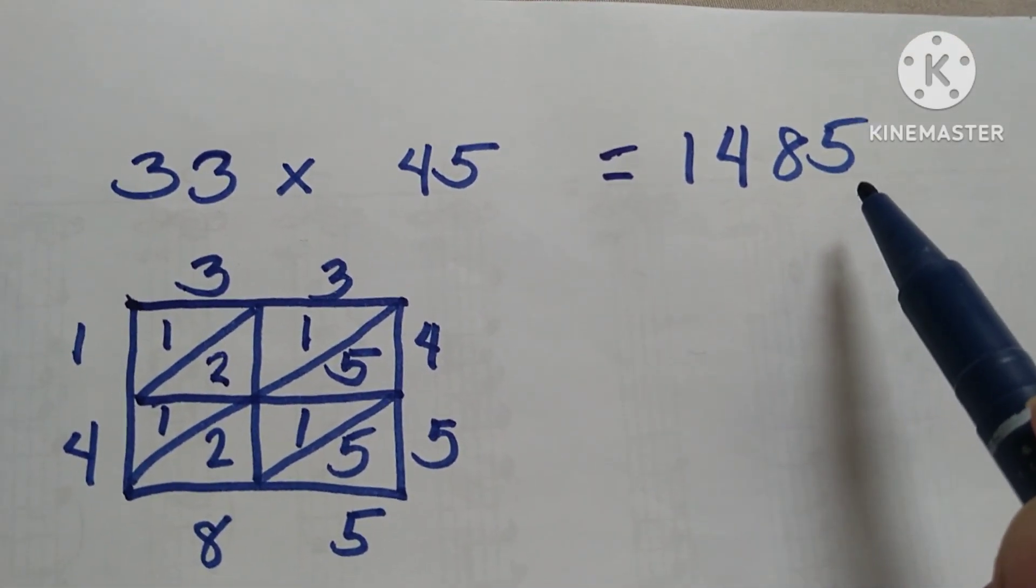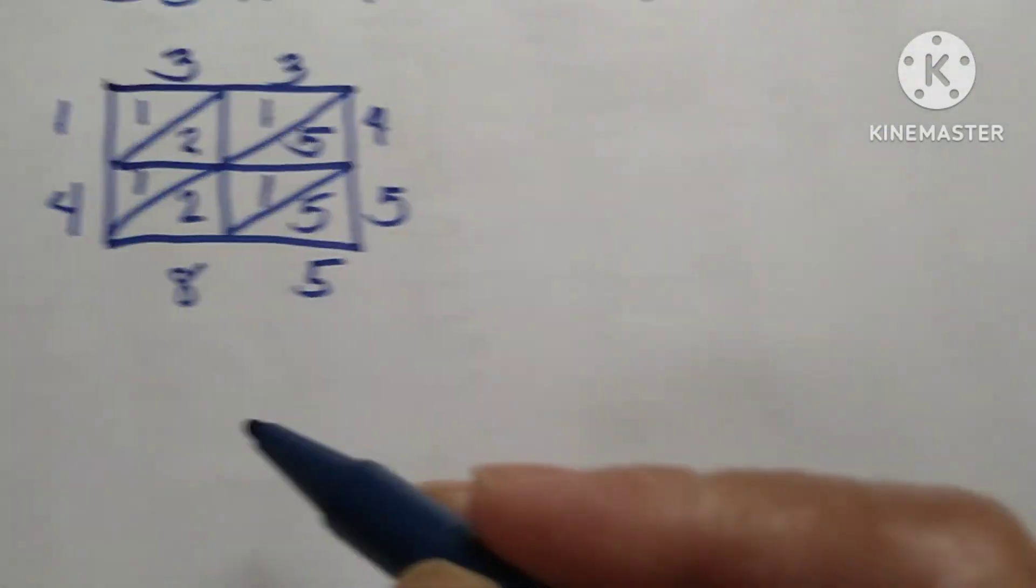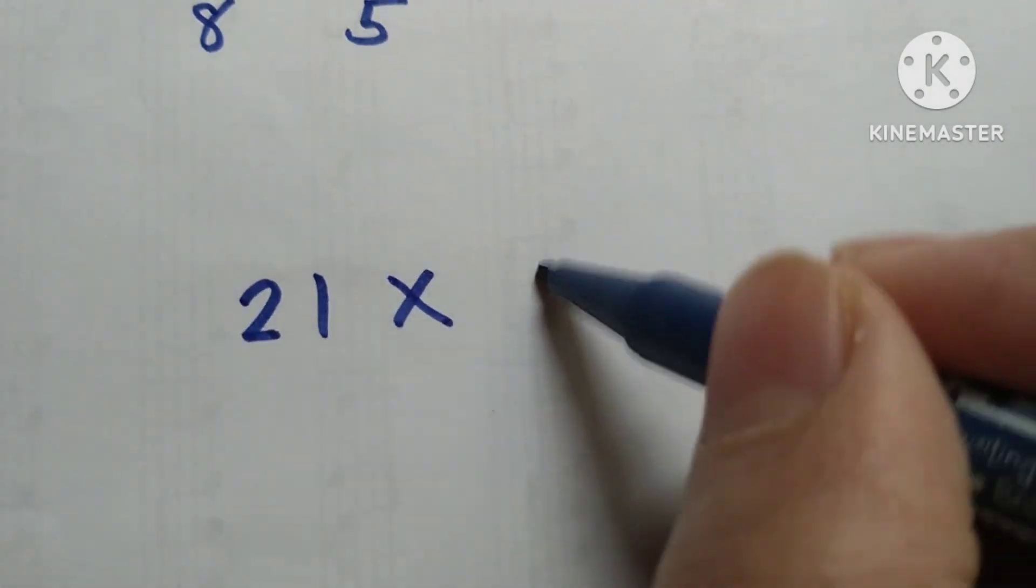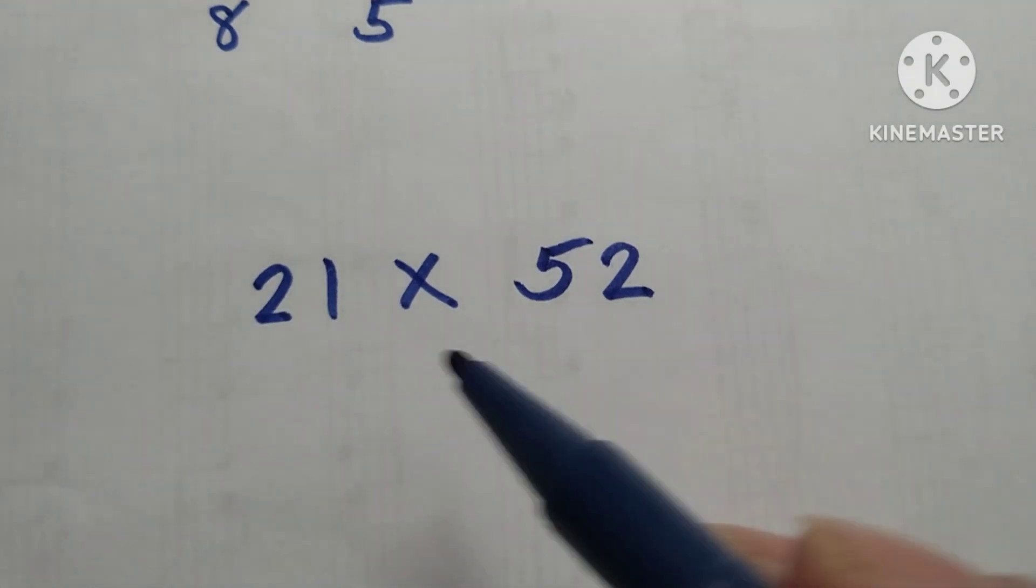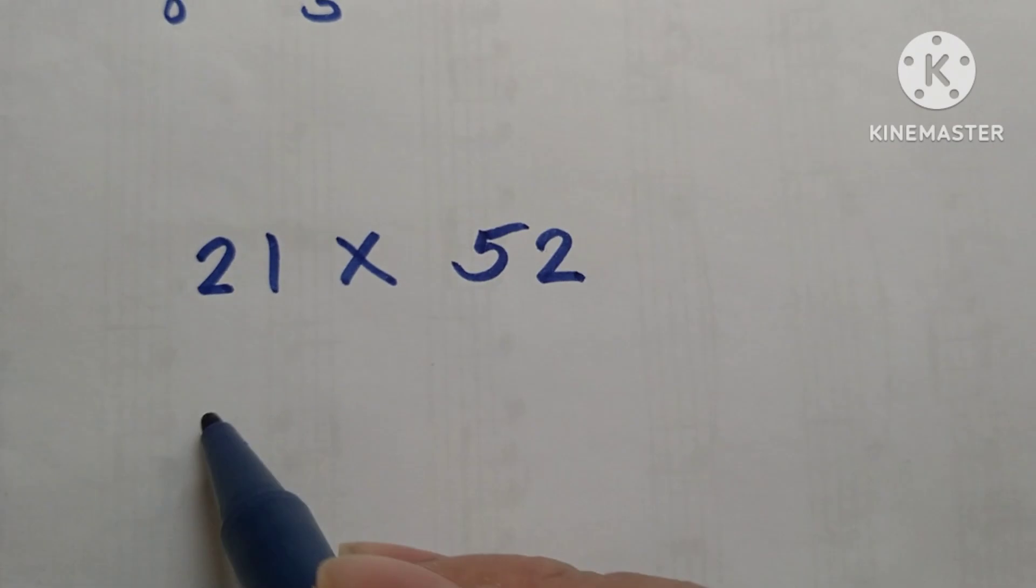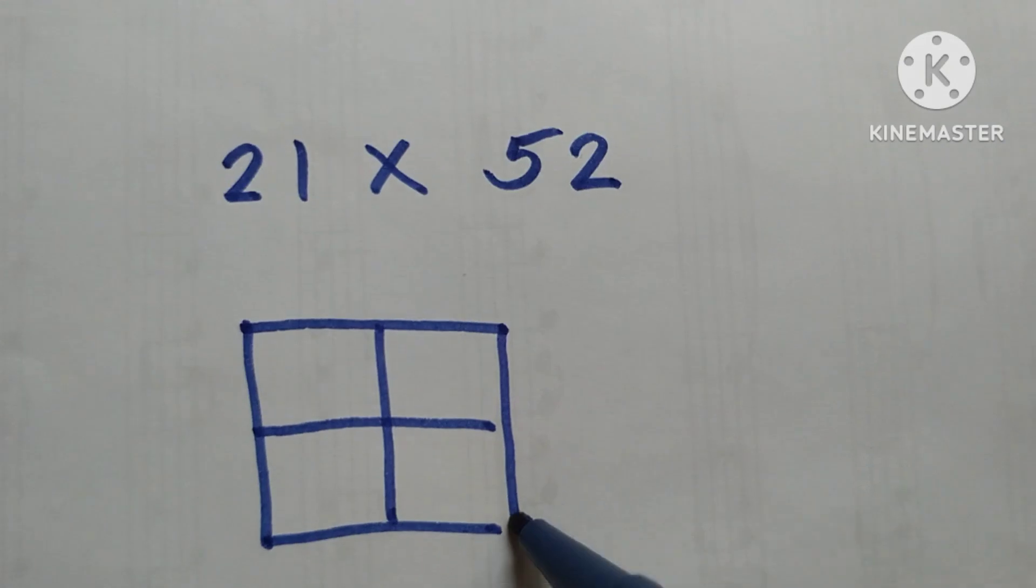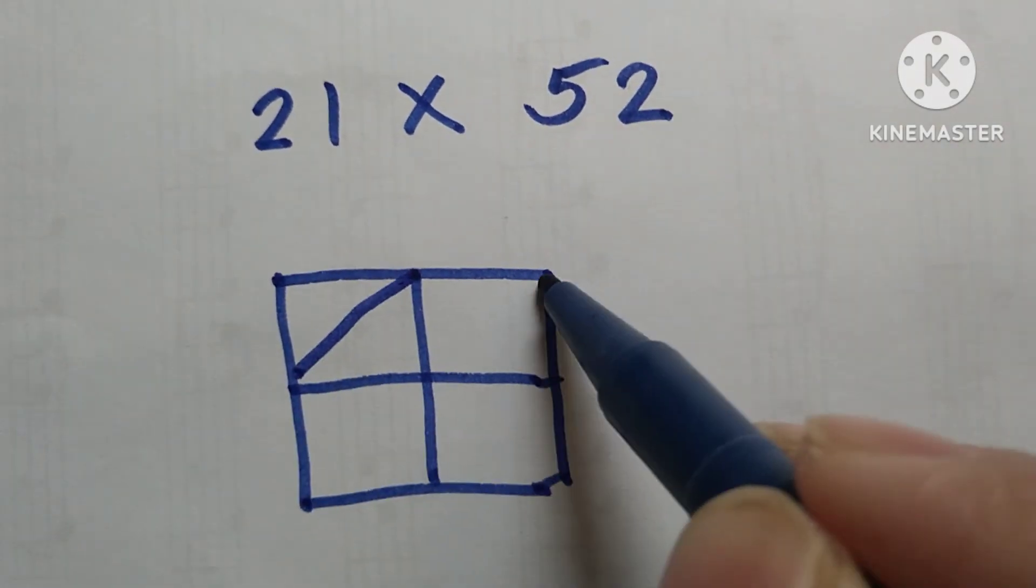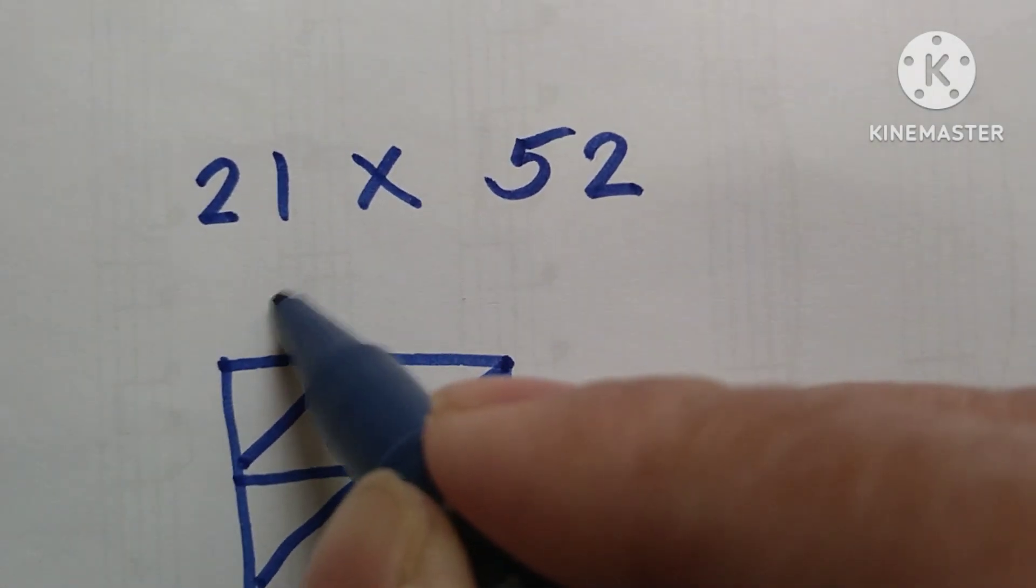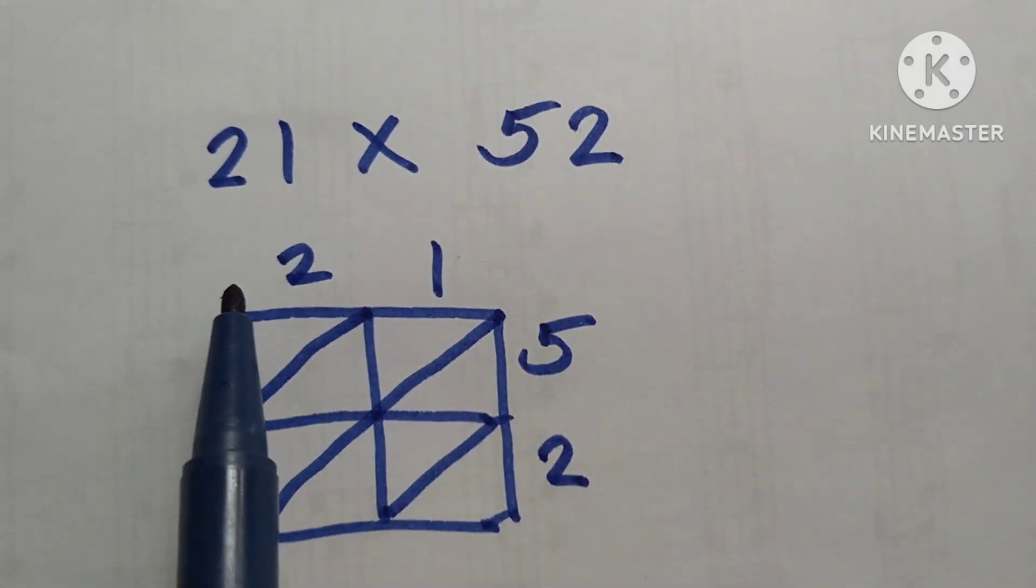We got the correct answer. Let's try again one more example to prove this very easy trick. Example is 21 times 52. The first step, as I have said, is to make two rows and two columns, and then put lines here in the section and put the numbers here: two, one, five, two.